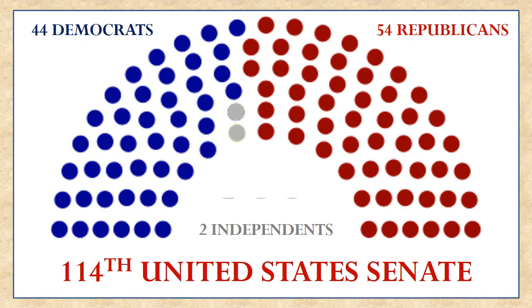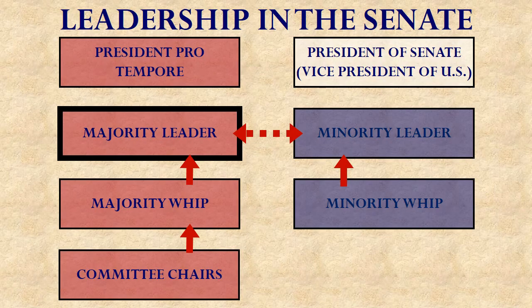The problem with this 60-vote threshold for cloture is that hardly ever does one political party have 60 votes in the Senate. Currently, the Republicans who control the Senate have 54 seats, while the Democrats have only 44. This means the Republicans can never really stop a filibuster if the 44 Democrats are united — the 54 Republicans, if they try to invoke cloture and the Democrats stick together, can never get the 60 votes they need. This makes the process of legislating in the Senate very different from the House of Representatives.